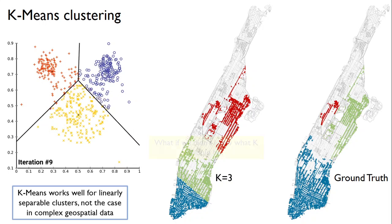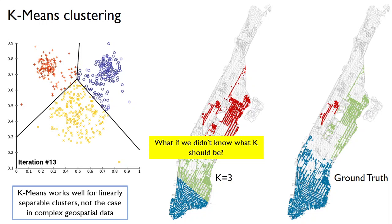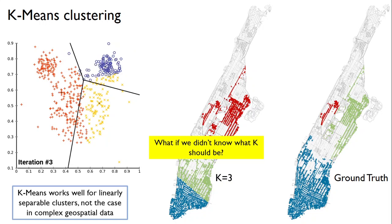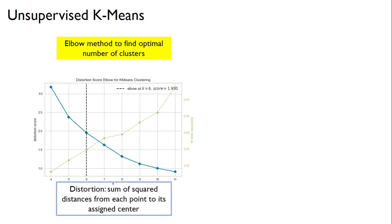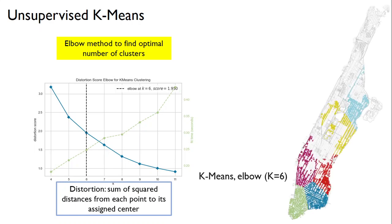But how would k-means perform if we did not know a priori the value of k, or how many clusters there actually are? This is often the case in unsupervised learning applications. We use the elbow method, which finds the value of k corresponding to the distortion vs. k graph, where distortion is the sum of squared distances from each point to its assigned center. The elbow of the graph is chosen as the optimal k. When there is only one cluster, distortion is highest; when each point is its own cluster, distortion is zero. The elbow balances these extremes — in this case corresponding to k equals 6, which makes the algorithm perform even worse compared to the ground truth.